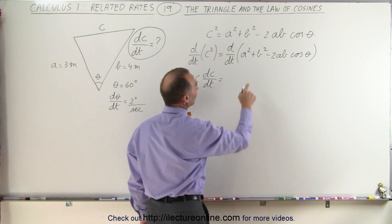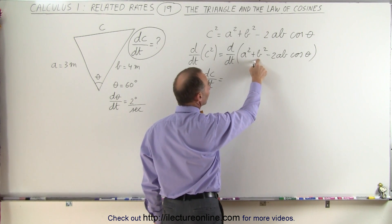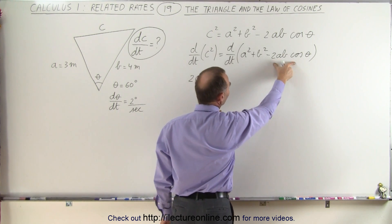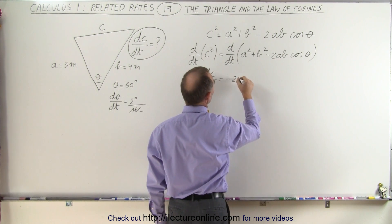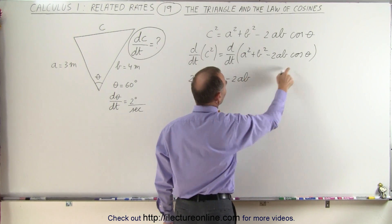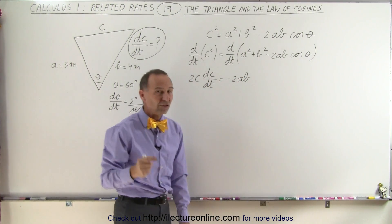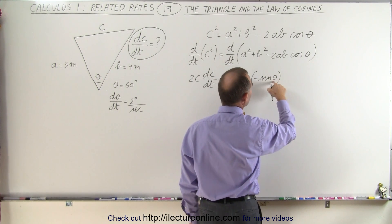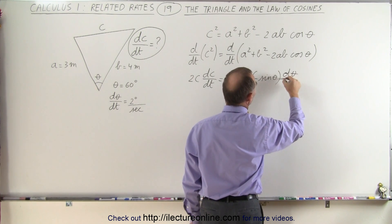On the right side, we notice that A is a constant and B is a constant, so when we take the derivative with respect to time, those go to zero. We have minus 2AB times the derivative of the cosine, which is the negative sine, times the derivative of the angle with respect to time.